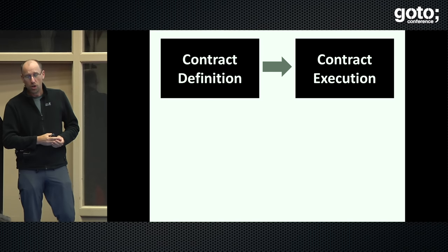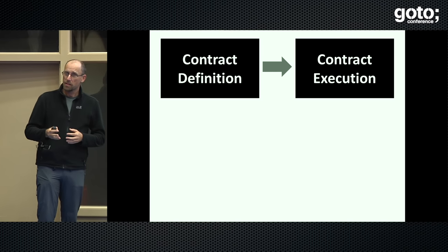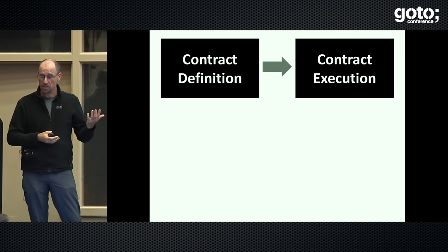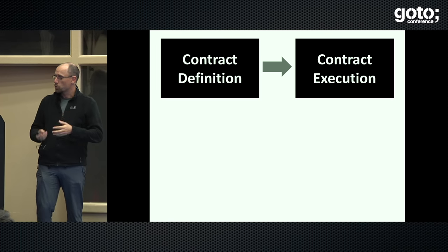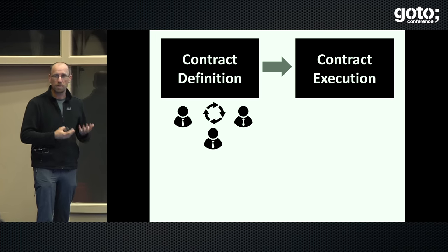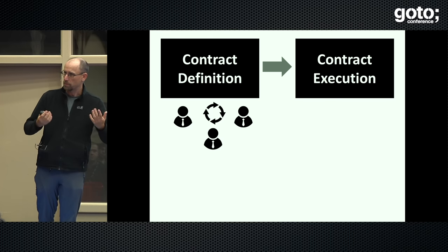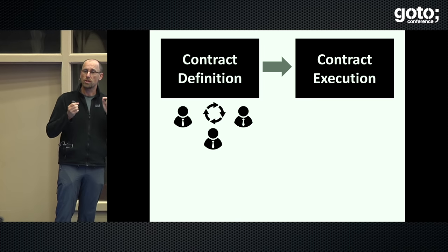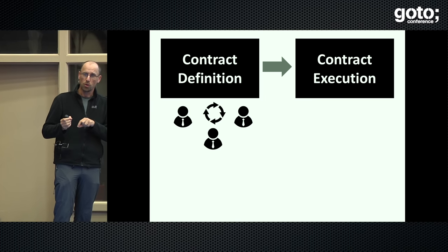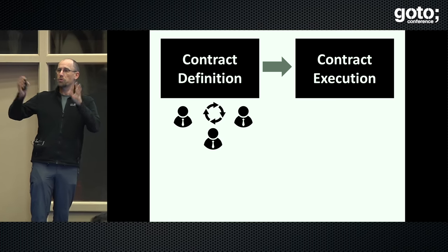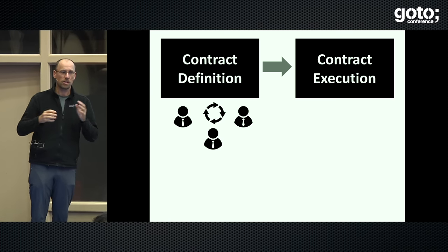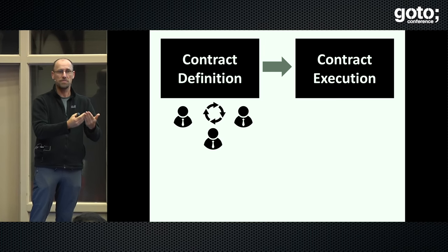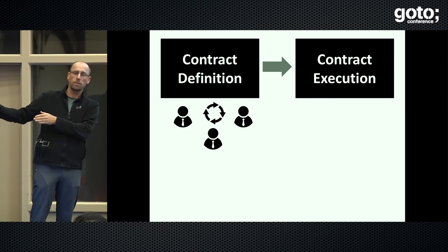If we look at contracts, there are two phases — like with any program, but specifically for contracts: you have the contract definition phase and then the contract execution phase. In the definition phase, you have a bunch of parties, usually lawyers or people like that — meaning non-programmers — who have to agree on what the contract is supposed to do. There's no need for crypto or any of this; it's just making sure we all understand what the contract does when it's going to be executed.